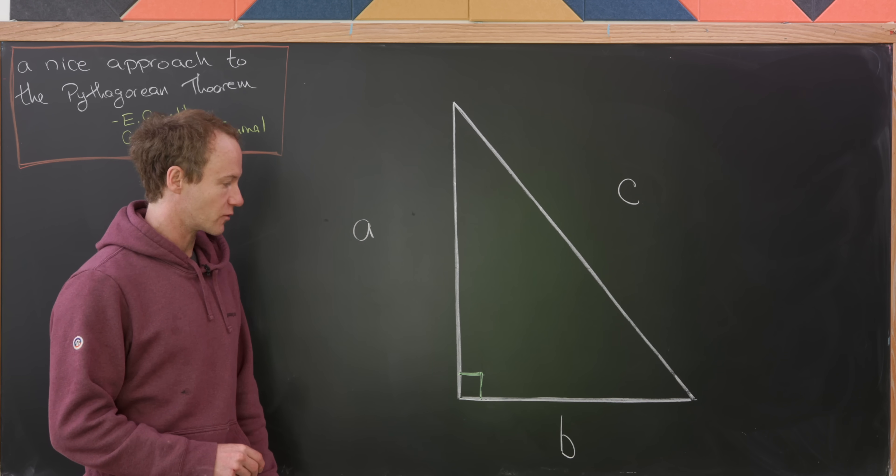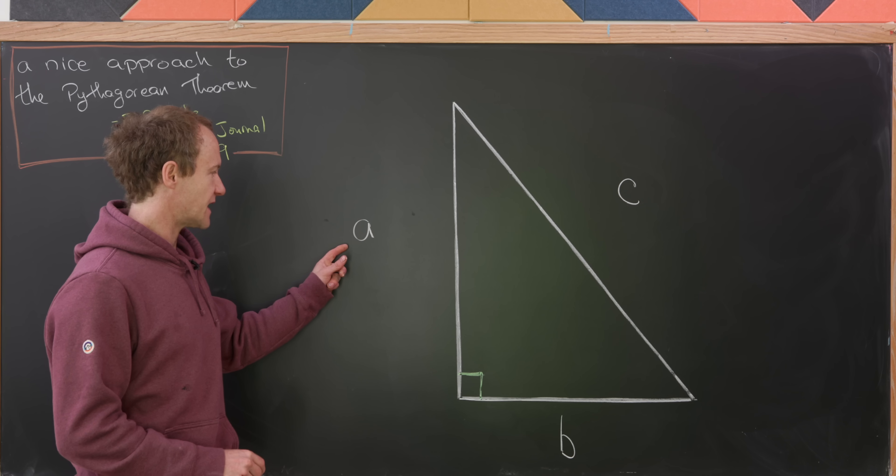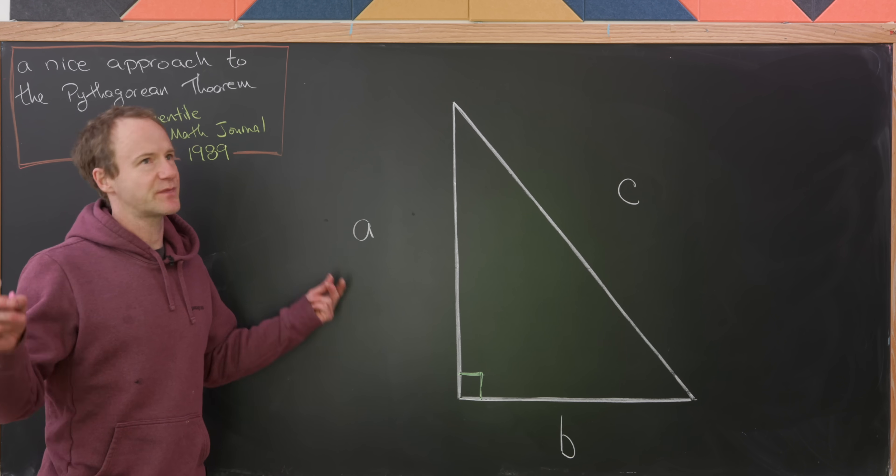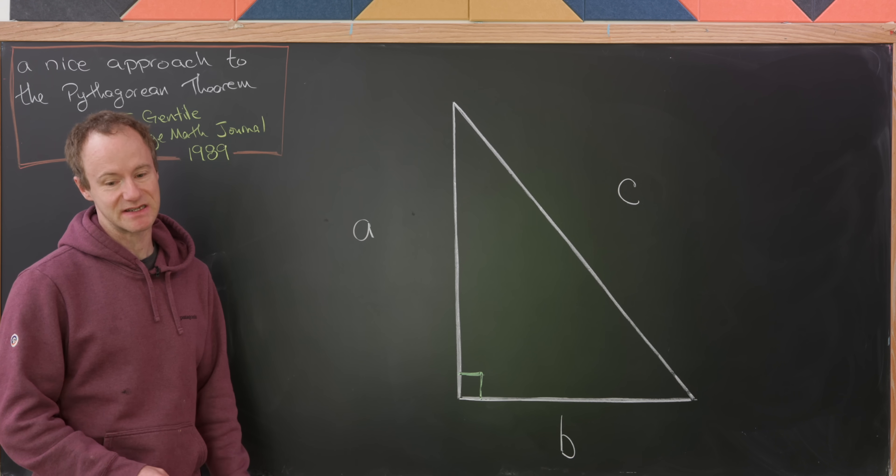Let's start over here with our right triangle. So we've got side lengths A, B, and hypotenuse length C. Obviously we're trying to show that A squared plus B squared is equal to C squared.